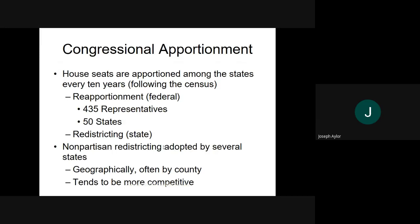These seats tend to be more competitive. There's more of a chance that certain congressmen might lose a seat or have to do more to protect their seat in terms of reelection. So to review: reapportionment is done at the federal level, redistricting is done at the state level. We reallocate the 435 representatives to the states, and then the states redraw the district lines.